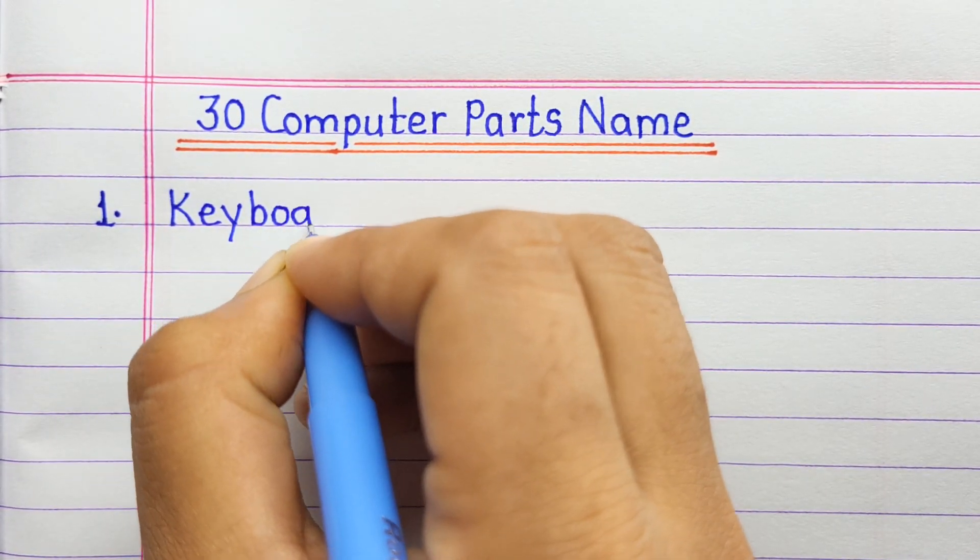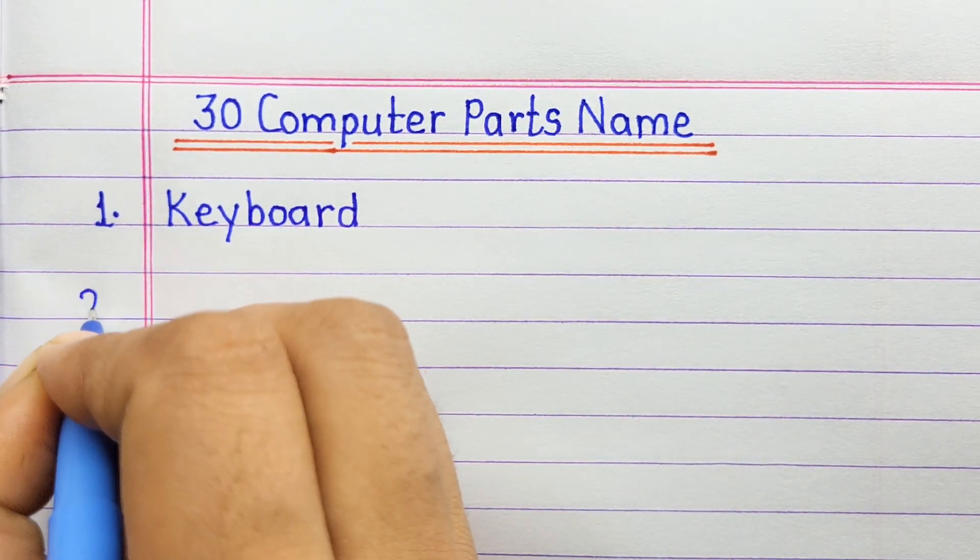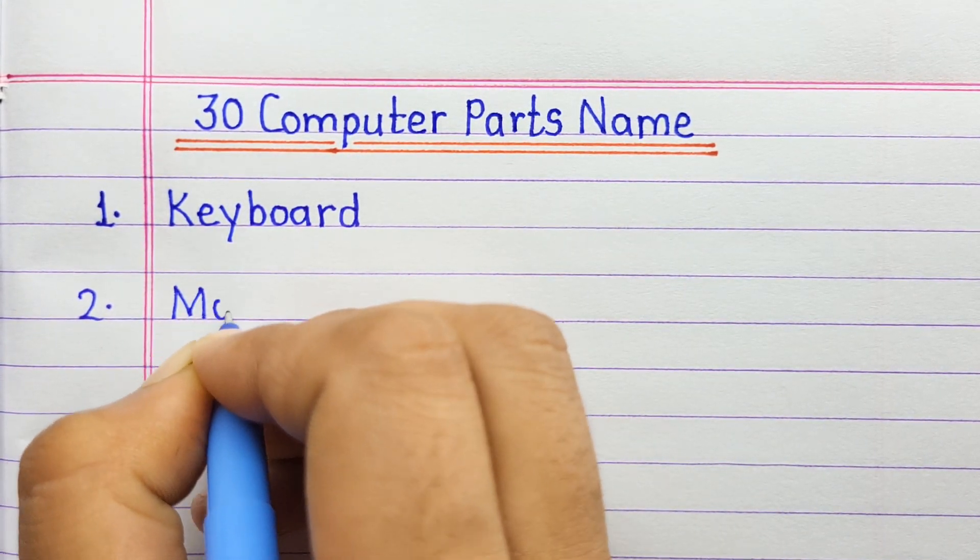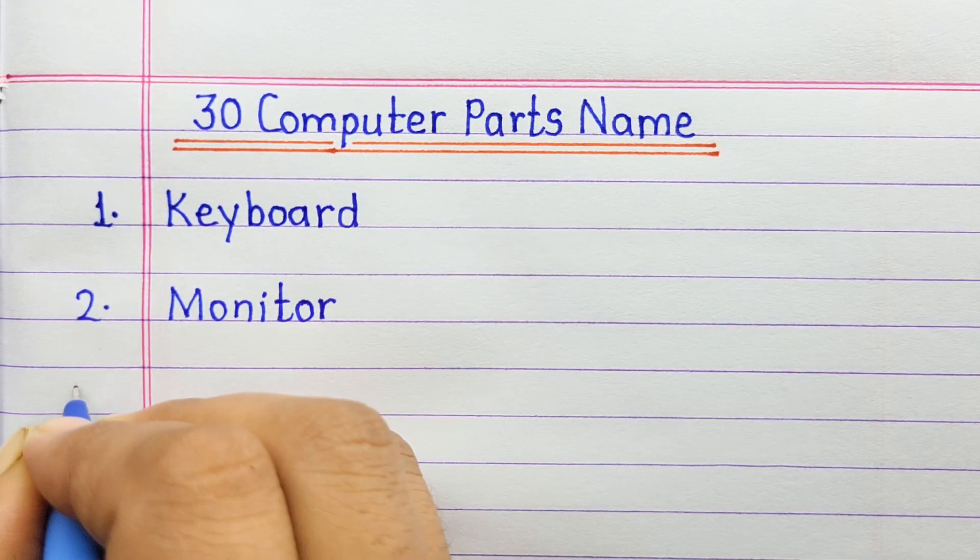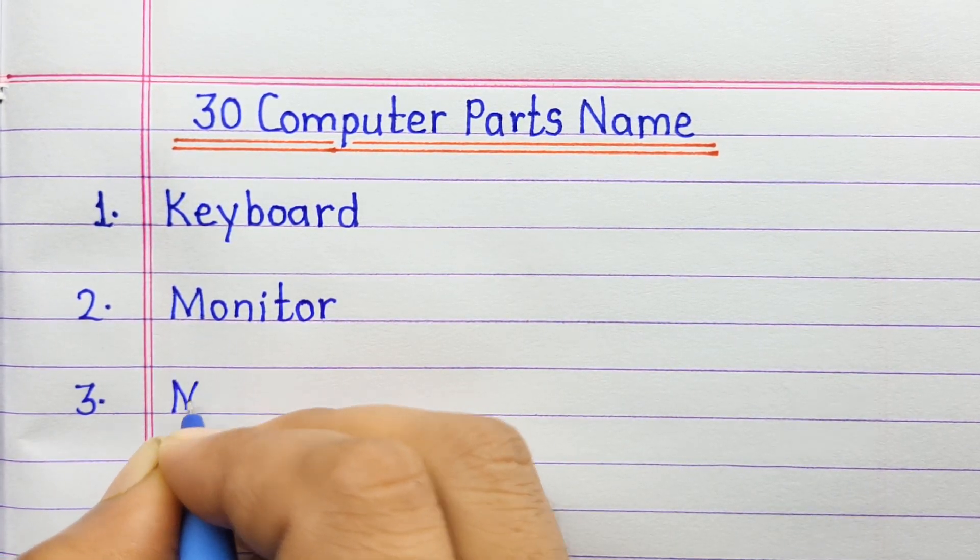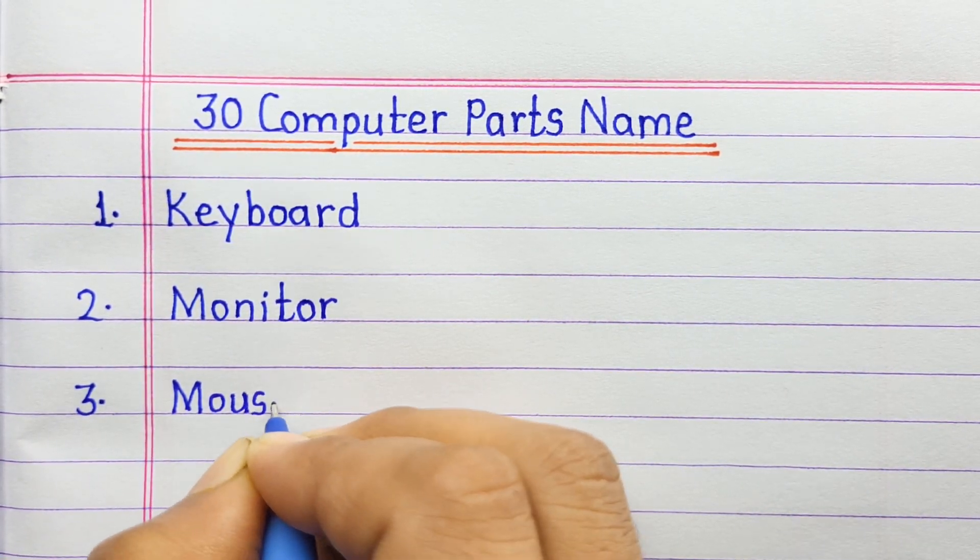Number one: keyboard. Number two: monitor. Number three: mouse.